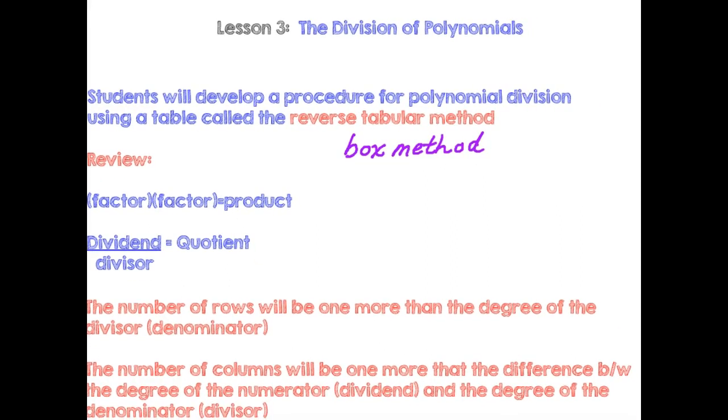So a couple things to review. When you multiply two numbers together, those are called factors and the result is a product. So if I say what is the product of five and two, you're going to tell me it's ten. Five and two are factors. You multiply together and the product is ten. If we start talking about dividing, if I said ten divided by two, that's going to equal five.